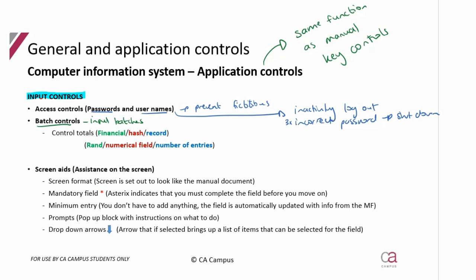There are big risks in batch processing: you could lose some data waiting to input it, you could accidentally input duplicates, and there are lots of risks of errors. So we have controls to help prevent errors when inputting a batch of data. These are called control totals, and there's both a manual and a computerized element to them.